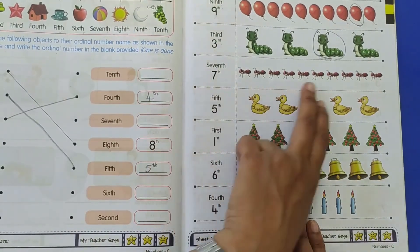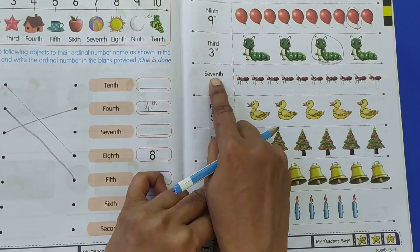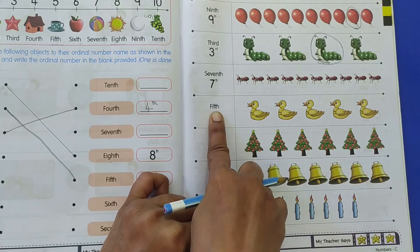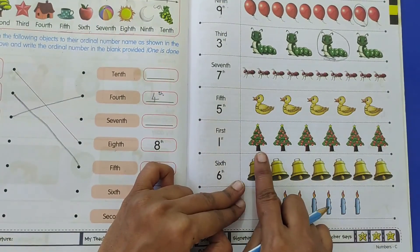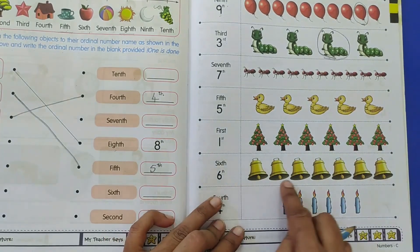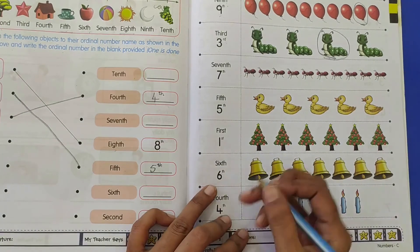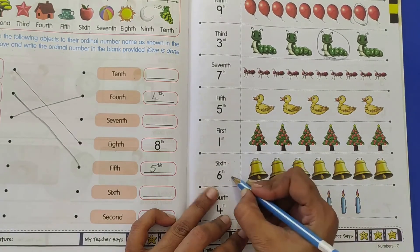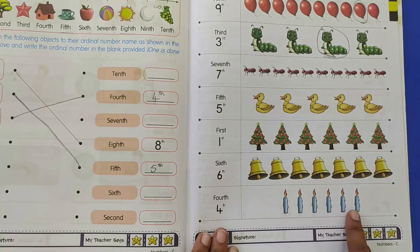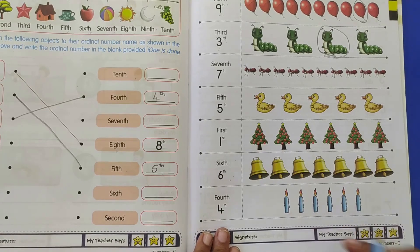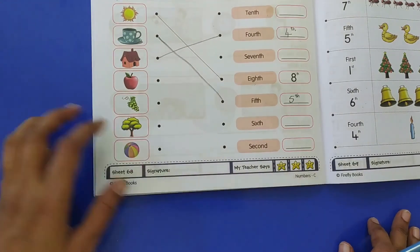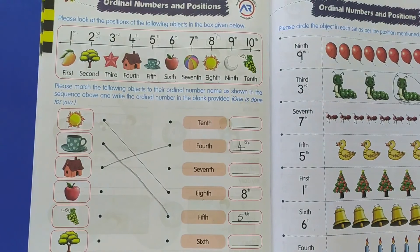So in the same way children, here you have to circle the ant which is in the 7th position, here circle the duck which is at the 5th position, circle the Christmas tree which is in the 1st position, then here you will circle the bell which is at the 6th place, and last circle the candle which is in the 4th position. So this is your activity on page 68 and 69 of your maths book. That's all for today, thank you.